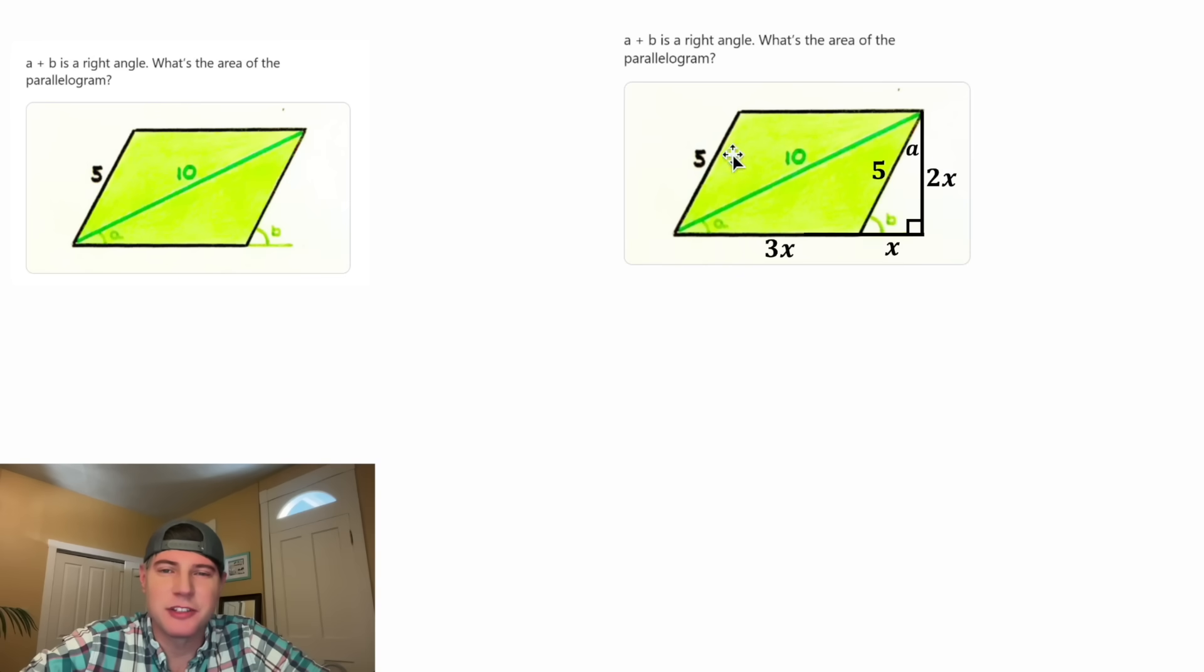Now that we have a base and a height, let's write a formula for the area of our parallelogram. The area of a parallelogram is equal to base times height. The base is equal to 3x and the height is equal to 2x. And then 3 times 2 is equal to 6 and x times x is equal to x squared. So the area of this parallelogram is equal to 6x squared.